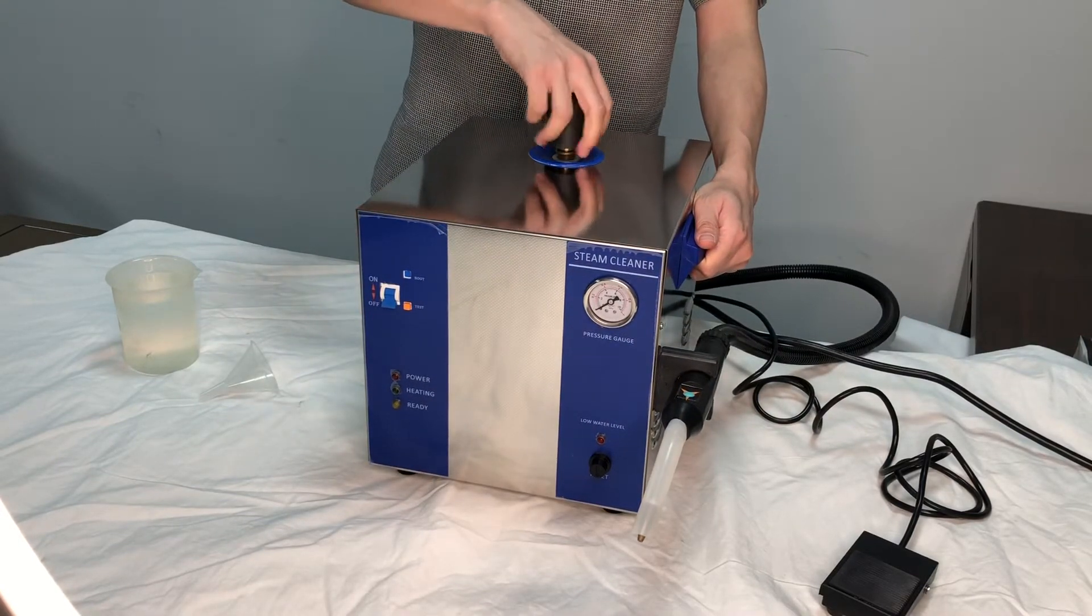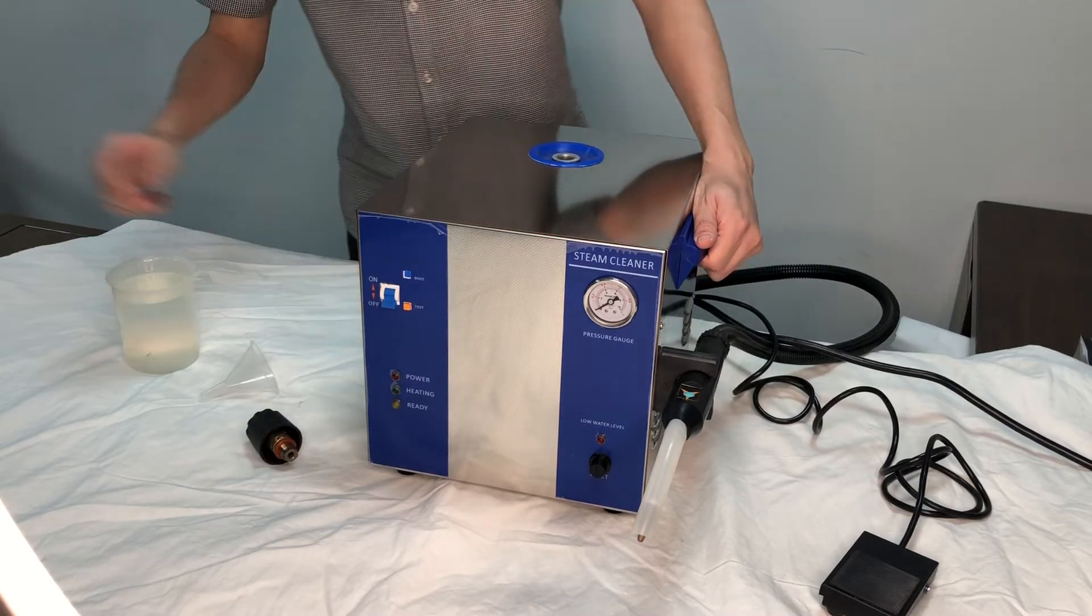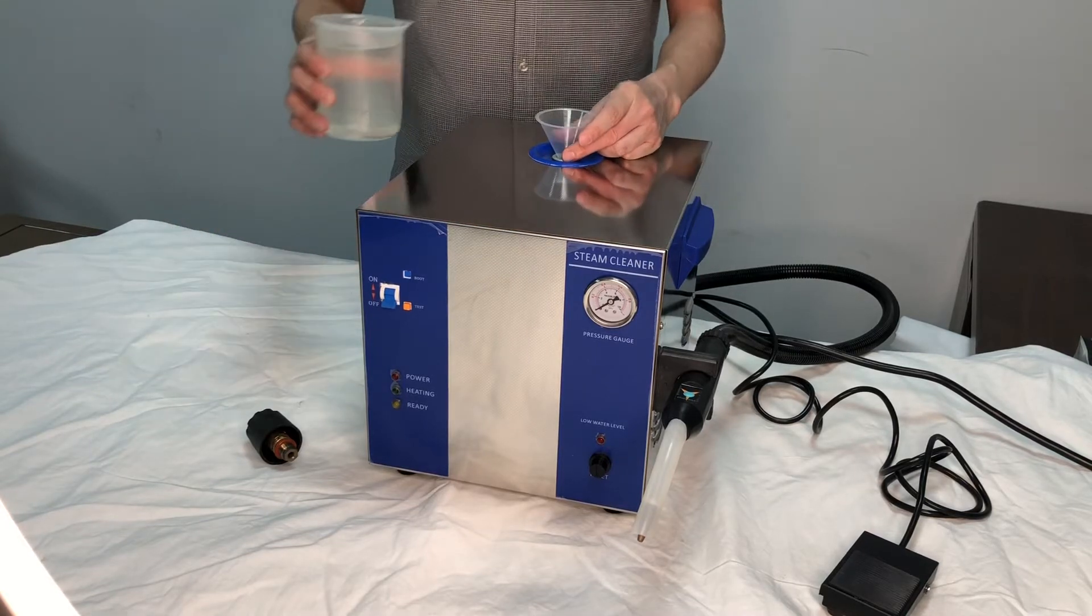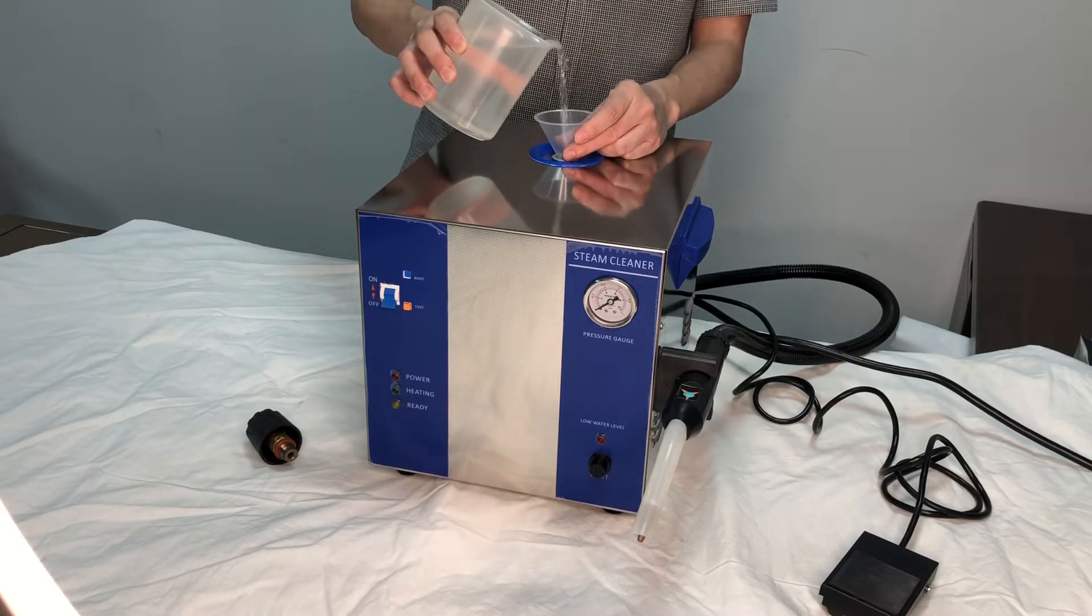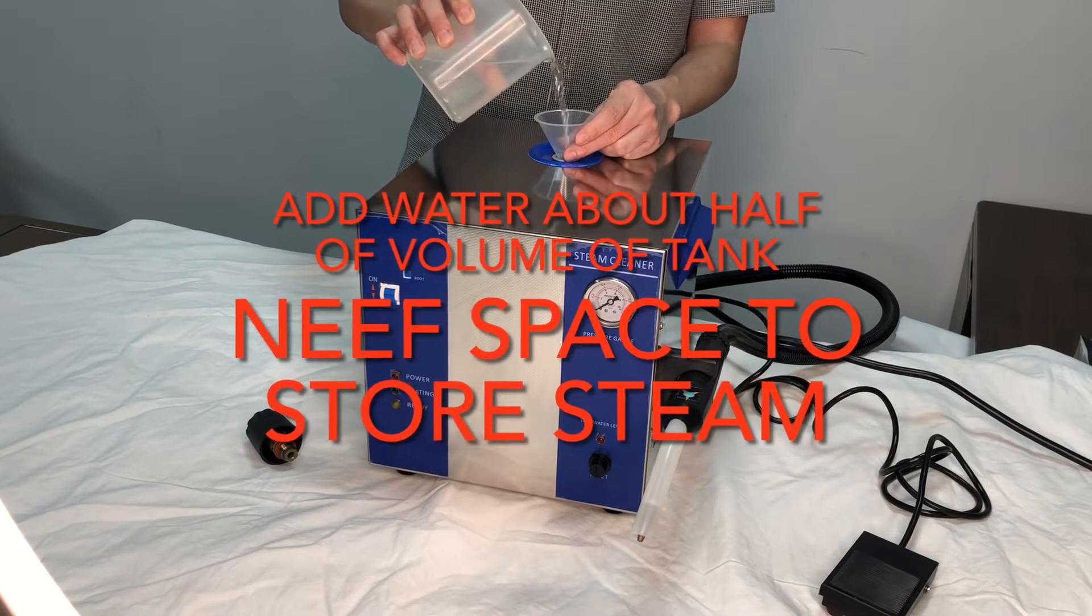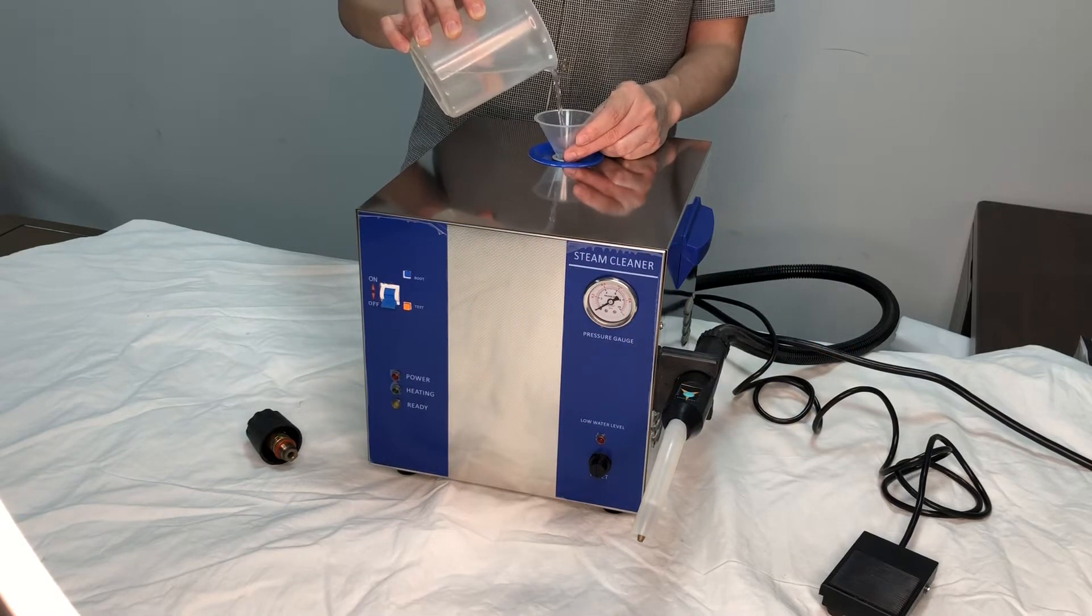First of all, we must add water. Take off the water inlet cup, then put the funnel into the hole and gradually pour in the water. The water should occupy only half of the tank to allow space to develop steam.